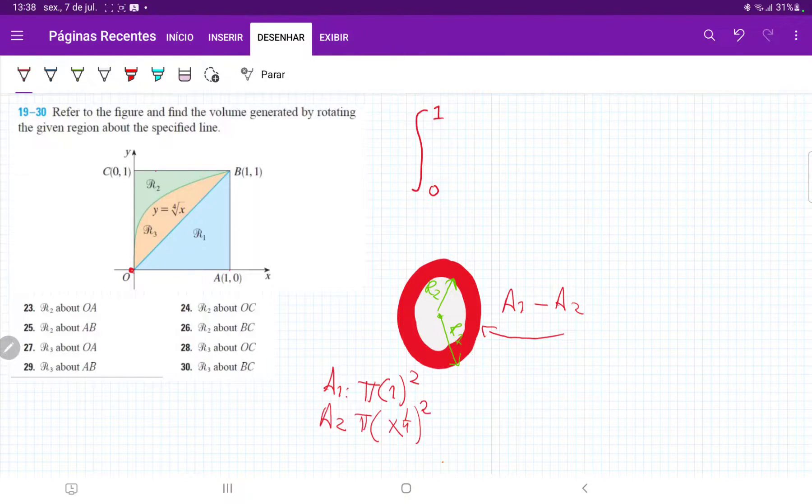So when we do this, we're going to have A1 minus A2 is equal to pi. I'm going to put it outside, and I have 1 minus the fourth root squared. It will give us x to the one-half, right? That's our A1 minus A2.